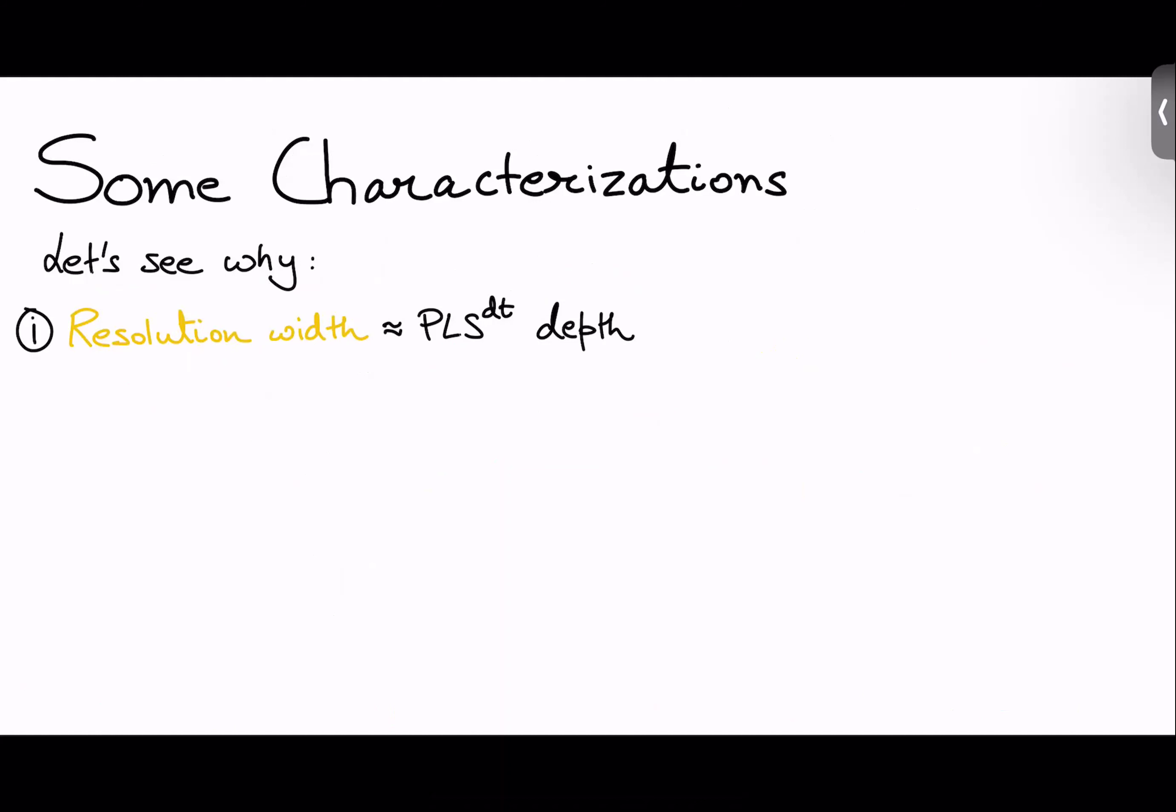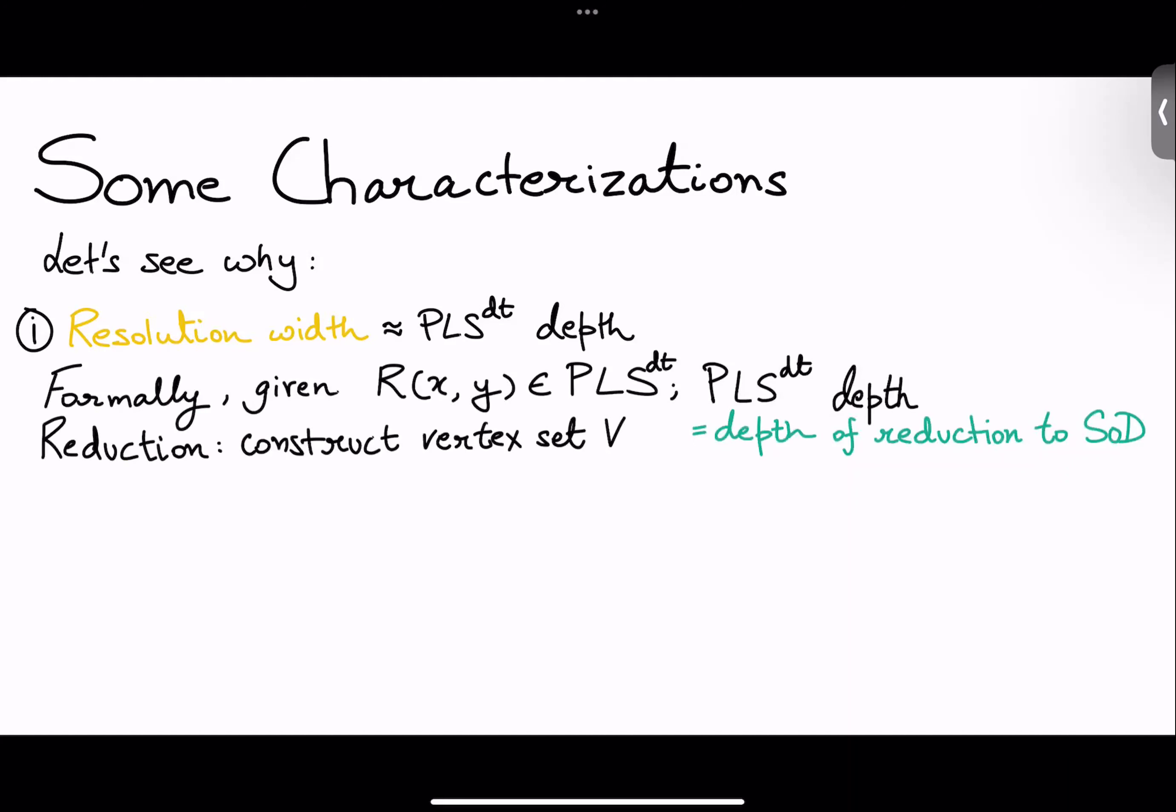So let's see some characterizations now. I'm going to be cheating and showing you the easiest ones. But, why is resolution equivalent to PLS depth? Well, first, let me tell you what PLS depth means. Given a relation which is in PLS, informally, I will define PLS depth to be the depth of the reduction to sink of DAG, which by definition it can solve. And what does the reduction do? The reduction constructs some vertex V. And for every vertex, we have decision trees, which give us the successor. And given a solution, which is a sink, it gives us the output for the actual problem.